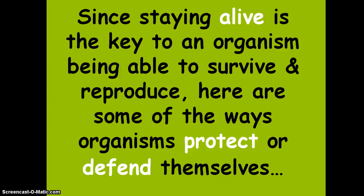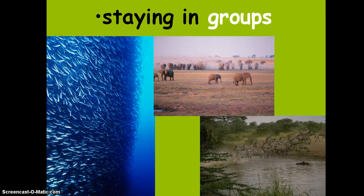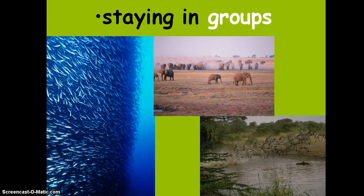Since staying alive is key to an organism being able to survive and reproduce, here are some ways animals protect or defend themselves. Staying in groups — you see fish in a large school, making it hard for predators to pick out any one of them to attack. Large groups of elephants and zebras also show how staying together provides protection in numbers.